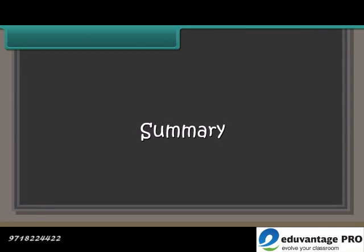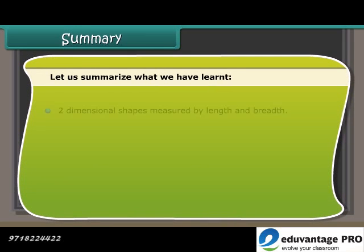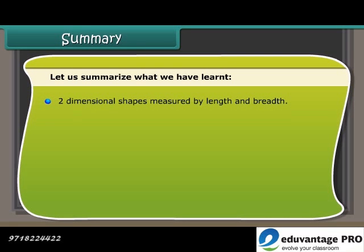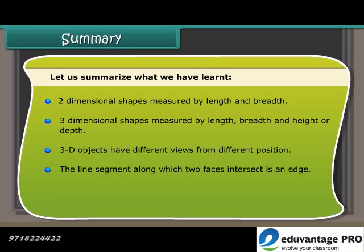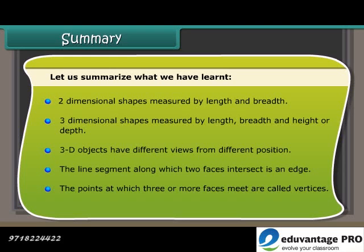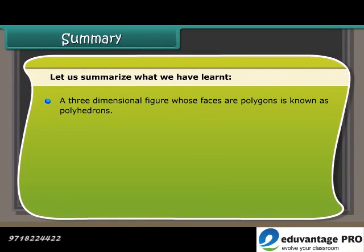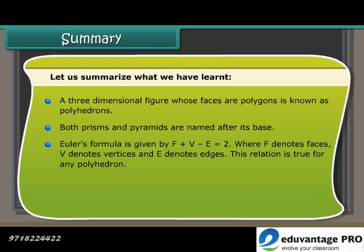In summary: two-dimensional shapes are measured by length and breadth; three-dimensional shapes are measured by length, breadth, and height or depth. 3D objects have different views from different positions. The line segment along which two faces intersect is an edge; points at which three or more faces meet are vertices. A three-dimensional figure whose faces are polygons is a polyhedron. Both prisms and pyramids are named after their bases. Euler's formula is given by F + V − E = 2, where F denotes faces, V denotes vertices, and E denotes edges — this relation holds true for any polyhedron.